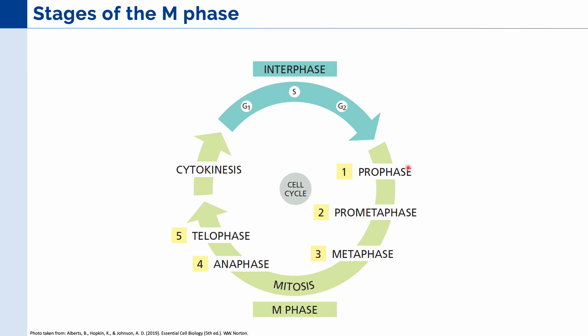First, we have the prophase, followed by the prometaphase, then the metaphase, anaphase, and finally telophase. After all of these have been completed, this is when the cell proceeds into cytokinesis.